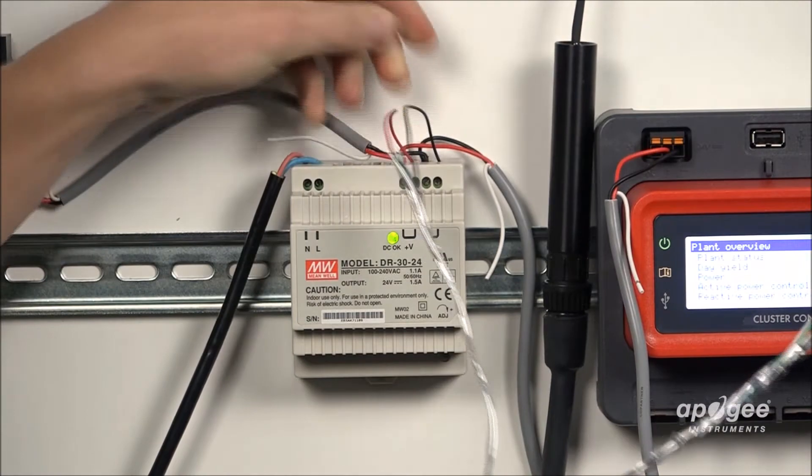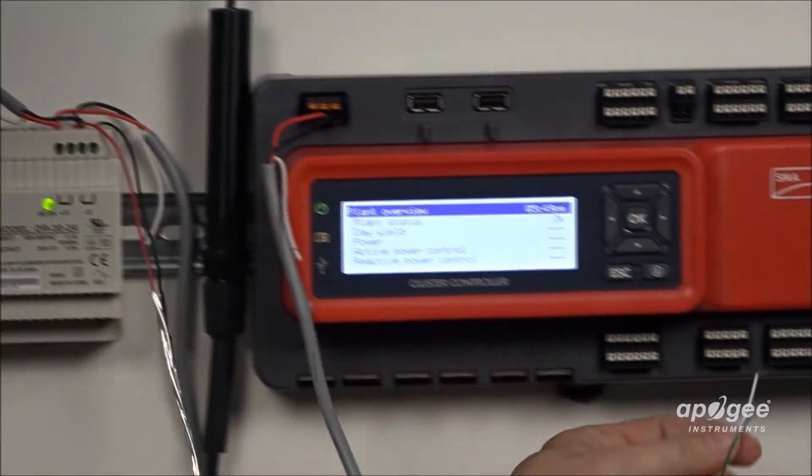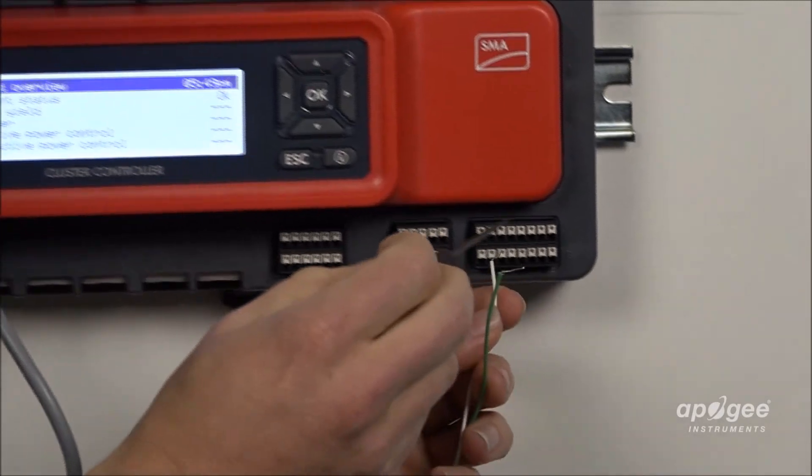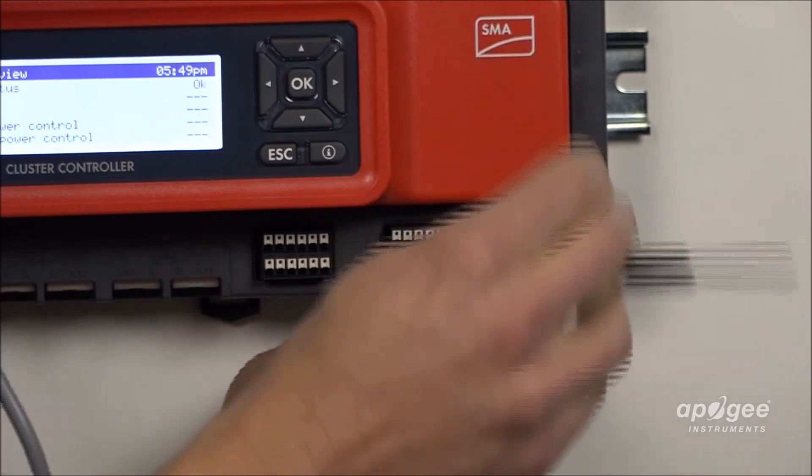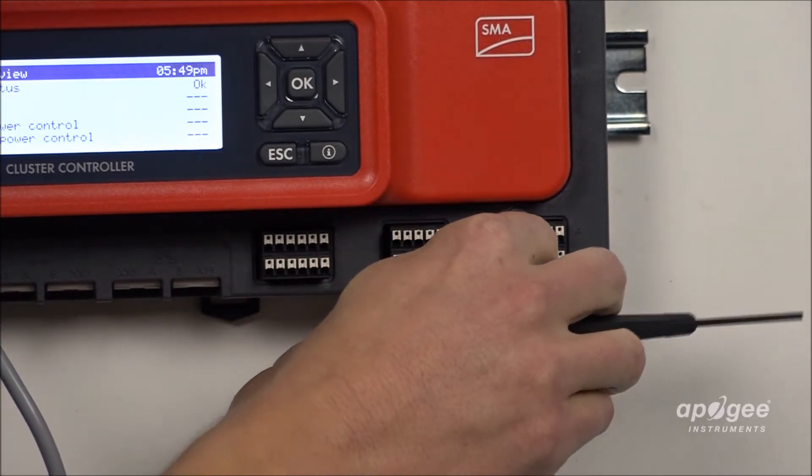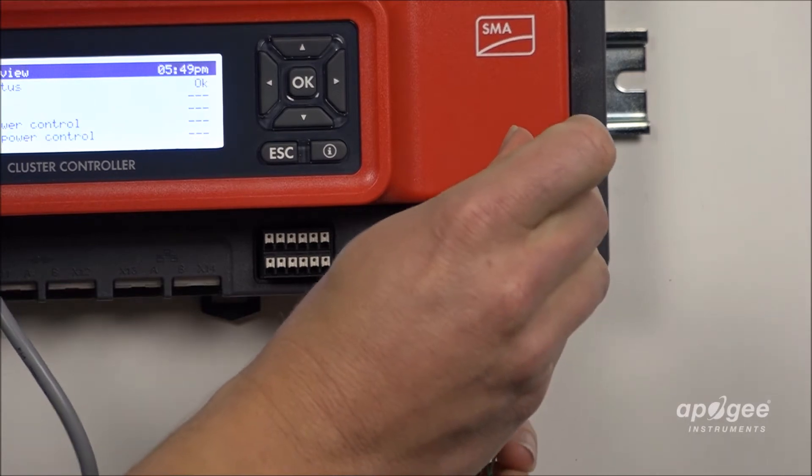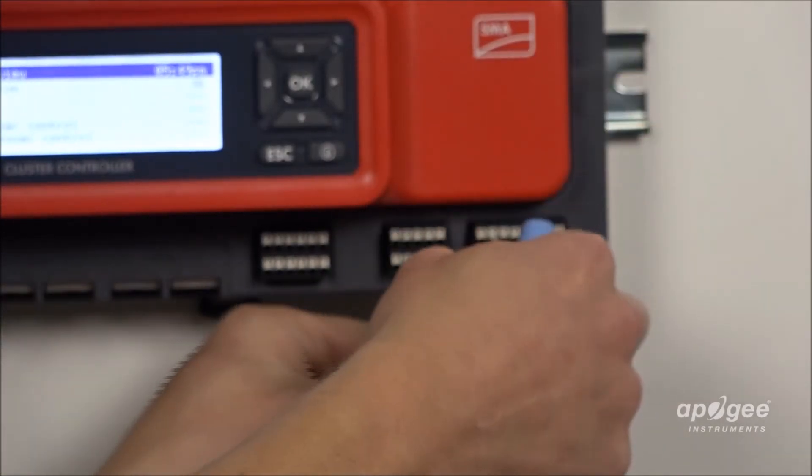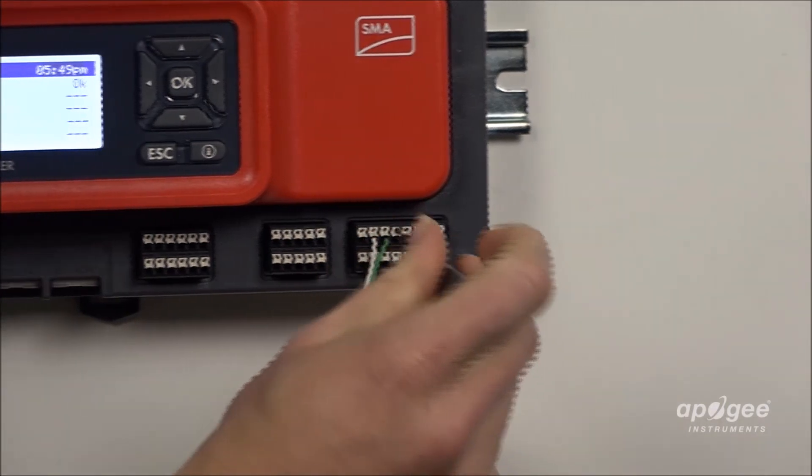Over here on the controller itself we are on X8 and the top row is A2 so we're going to go in A2 for the white conductor, A3 for the green conductor and these are just push in terminals so they just push in and then our shield we will go into A4.